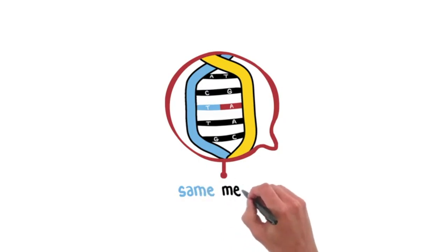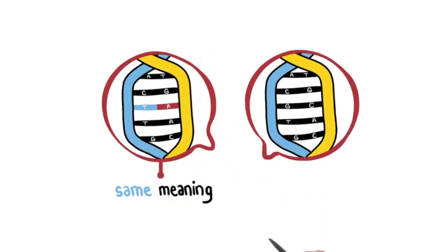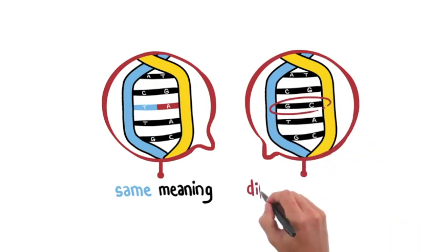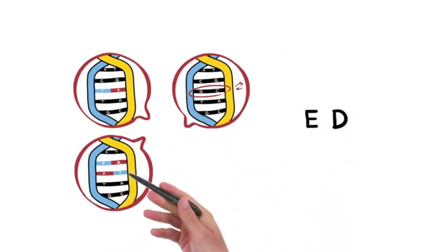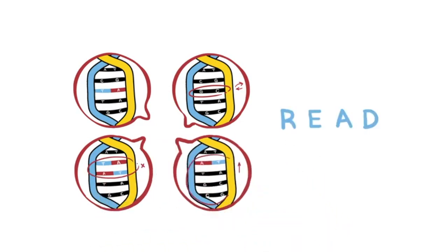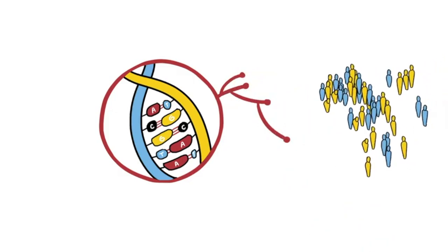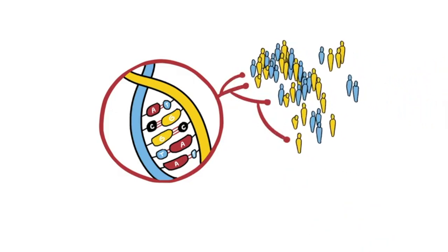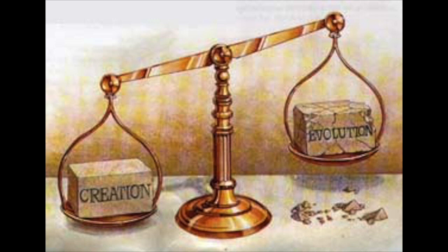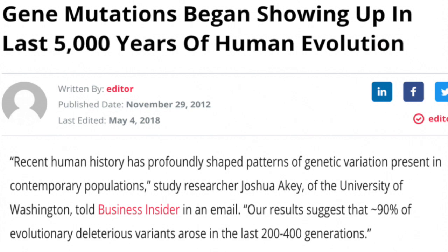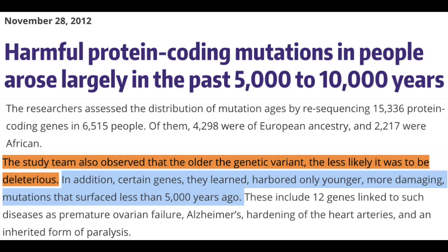Some alleles are spelled in a way that retains the original instruction of the gene. Other alleles contain changes to the sequence of letters, sometimes called DNA mutations, that change the meaning. Letters may be left out, repeated, or changed completely. Even a single letter change can have a big impact on the instructions that your body has. Significant changes in these genes are often linked to disease. But if that's not destructive enough, evolution has been dealt its death blow, as they have discovered that mutations are all new. Gene mutations only began showing up in the last 200 to 400 generations, which takes us back right to the beginning of creation — exactly what our model predicted.